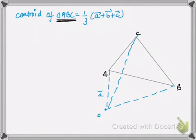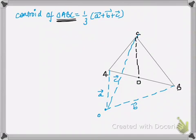For OA I'll write vector A, for OB here is vector B, and here is vector C. Now if I draw a median from vertex C down to point D on AB, the median divides the base of the triangle into two equal halves, so the length AD equals the length DB.